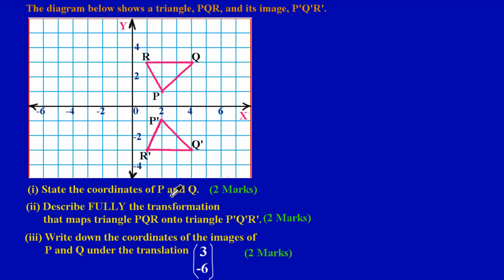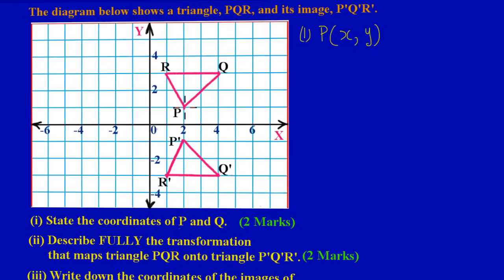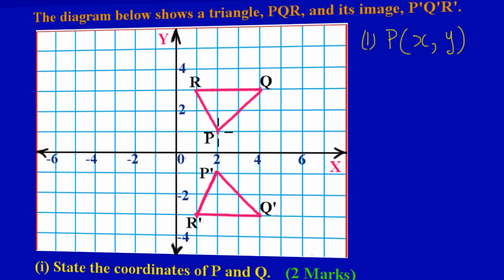In part 1, they are asking us to state the coordinates of P and Q — that's an easy two marks. When writing a coordinate, it's in the form X comma Y, where you write the X value first, separated by a comma, followed by the Y value. To find the coordinate for P, I position myself at point P and go down to the x-axis to read off that value. I came down from P and touched the x-axis at the point 2.